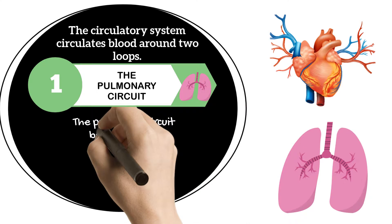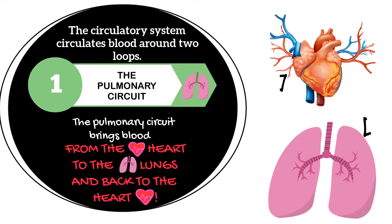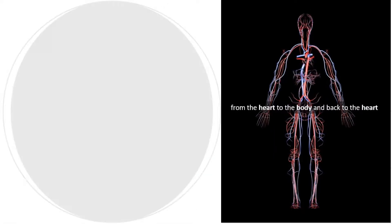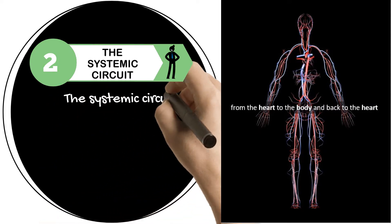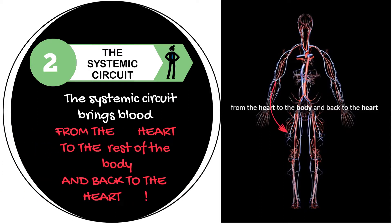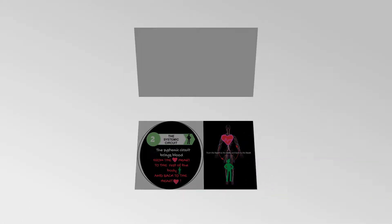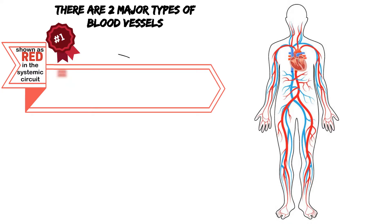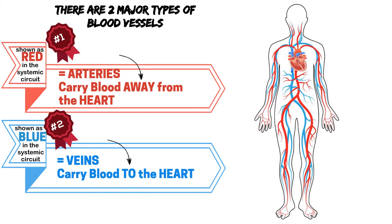The circulatory system circulates blood around two loops. The first one is the pulmonary circuit — this brings blood from the heart to the lungs and back to the heart. The second loop is called the systemic circuit, which brings blood from the heart to the rest of the body and back to the heart. There are two major types of blood vessels: arteries and veins. Arteries carry blood away from the heart, and veins carry blood to the heart.